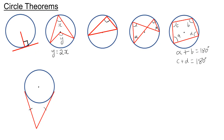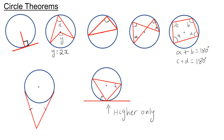There are six main properties of circles that we need to know to do with geometry, and there's also an additional one if you're sitting in the higher tier exam. If you remember this diagram on the screen, then you'll be able to work with all of the circle theorems.